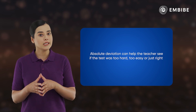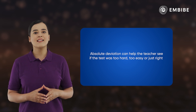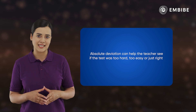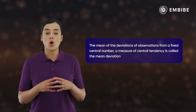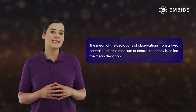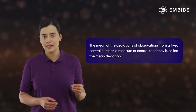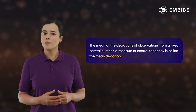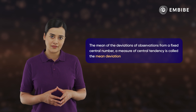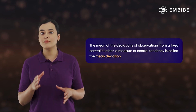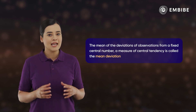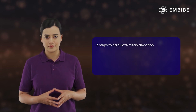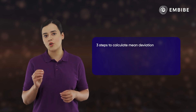Let us learn the method to find the mean deviation of grouped data. The mean of the deviations of observations from a fixed central number — a measure of central tendency — is called the mean deviation. You might have already learned how to calculate the mean deviation about the mean and median of ungrouped data. Let us quickly revise the steps involved in the calculation.